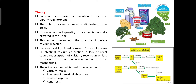The maintenance of calcium levels in our body is known as calcium homeostasis. Calcium homeostasis is mainly maintained by parathyroid hormones. PTH, the parathyroid hormone, is the hormone of the parathyroid gland and is mainly involved in the regulation of calcium.